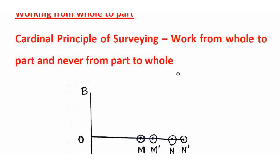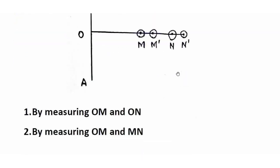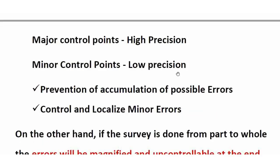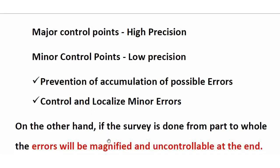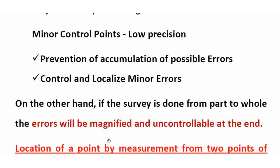That is why we work from whole to part — to prevent the accumulation of possible error, to control and localize minor errors. Minor errors may not be limited. On the other hand, if the survey is done from part to whole, the error will be magnified and uncontrollable at the end.